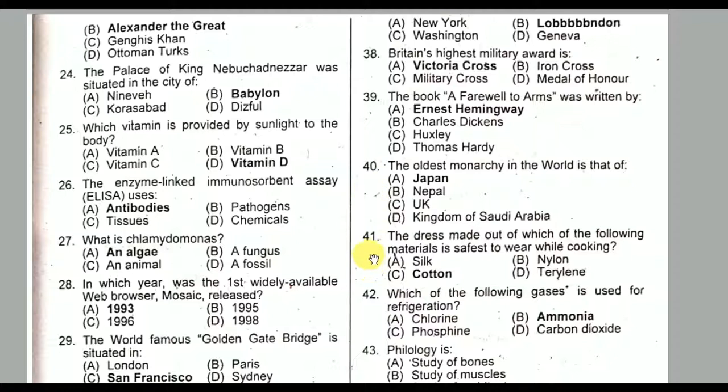Question number forty-one: The dress made out of which of the following materials is safest to wear while cooking? It is cotton. Option C is the correct option.